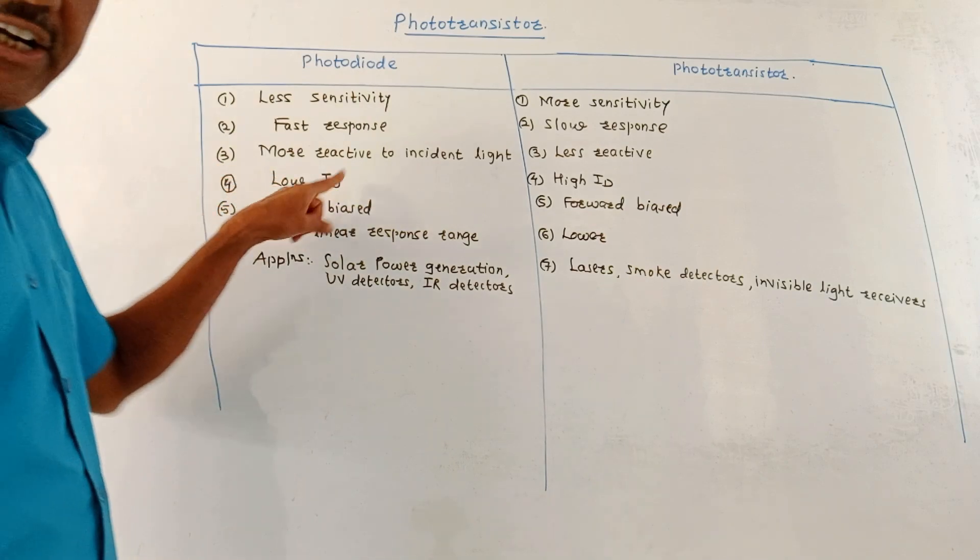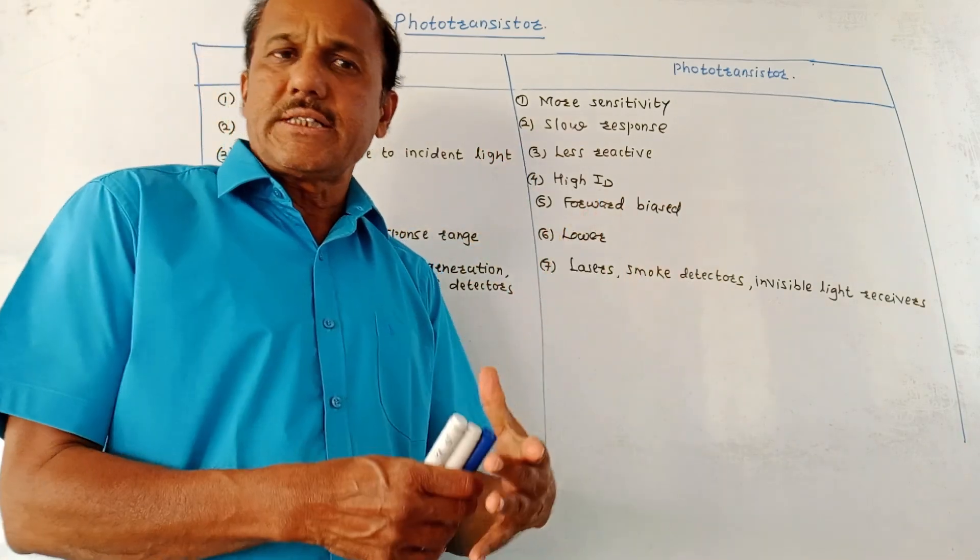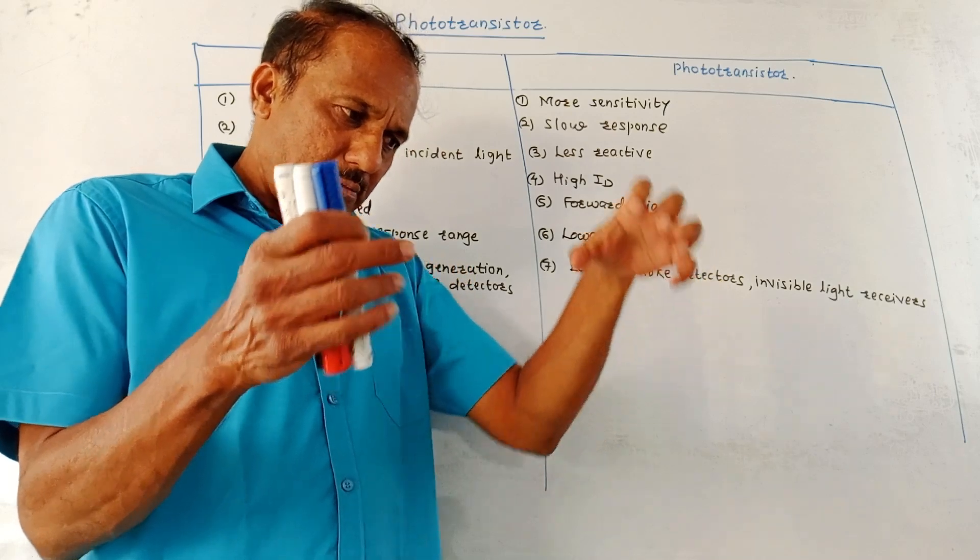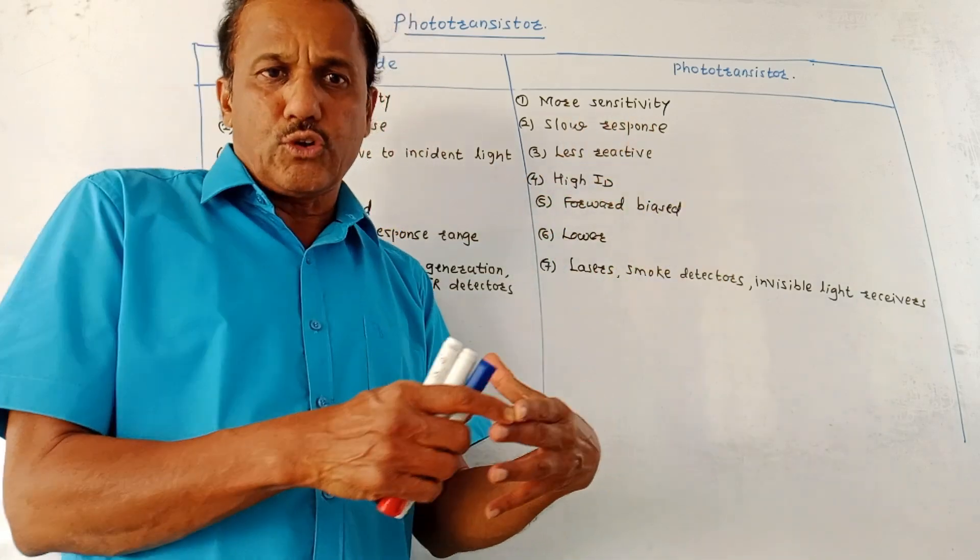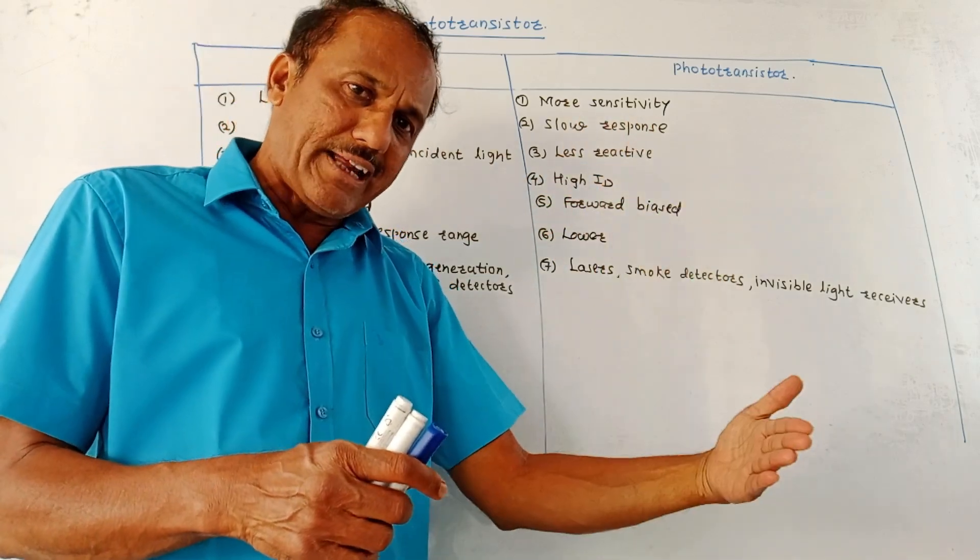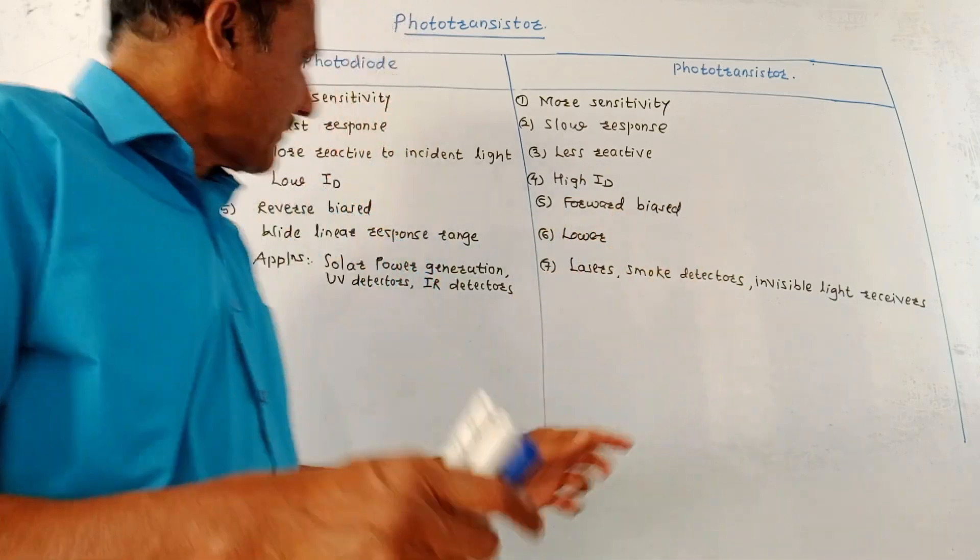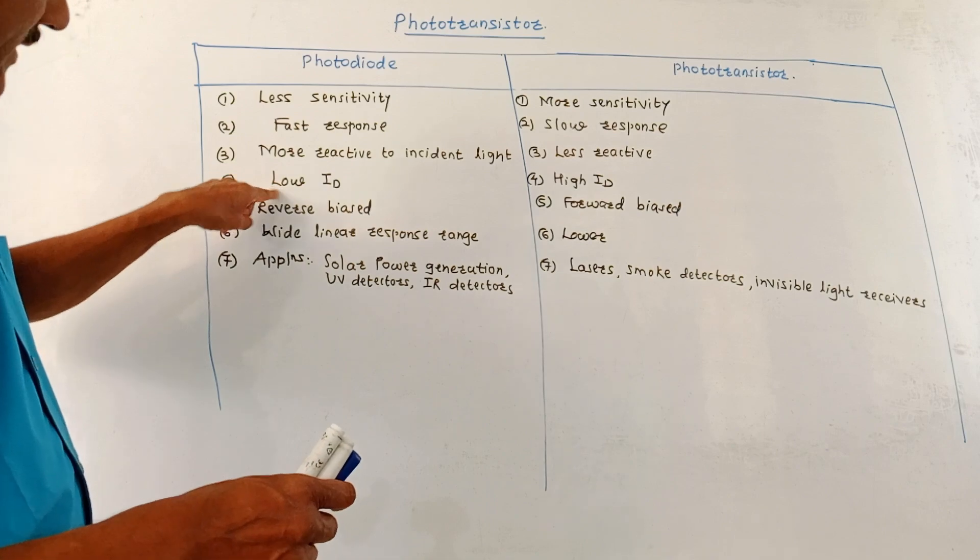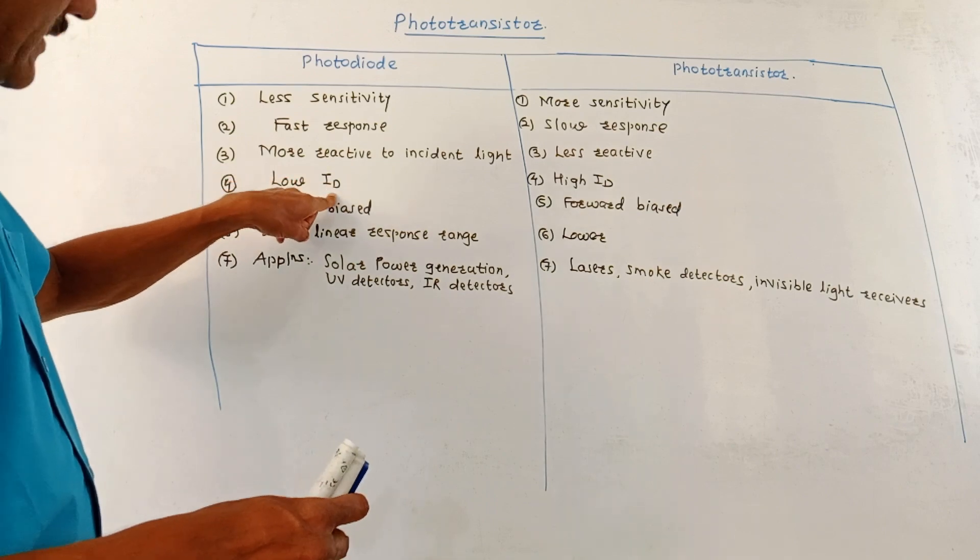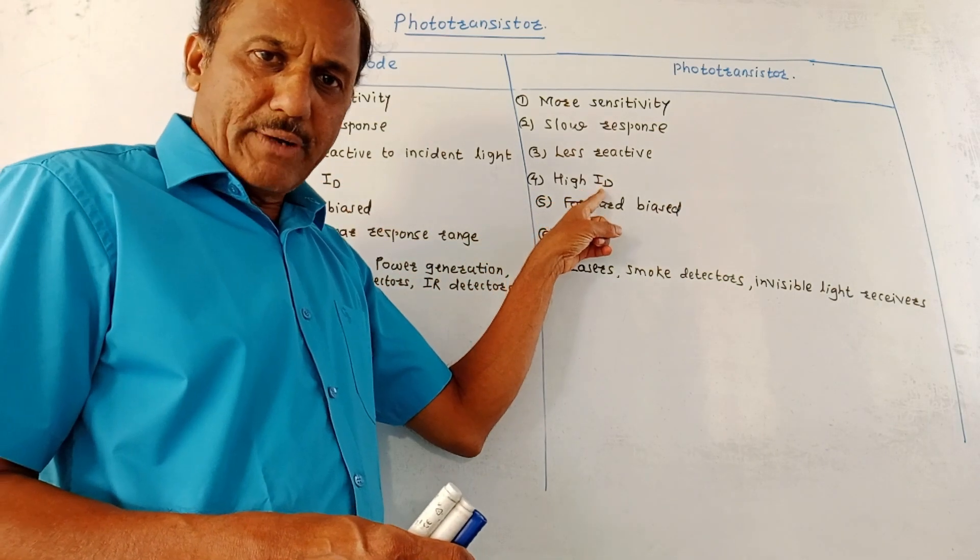Then low ID. ID stands for dark current. We have discussed that. Whenever the photons are not falling on the photodetector still due to the ambient light, some current is flowing through the structure. That is the dark current. In case of photodiode, comparatively, the value of dark current is low. In this case, value of dark current is high.